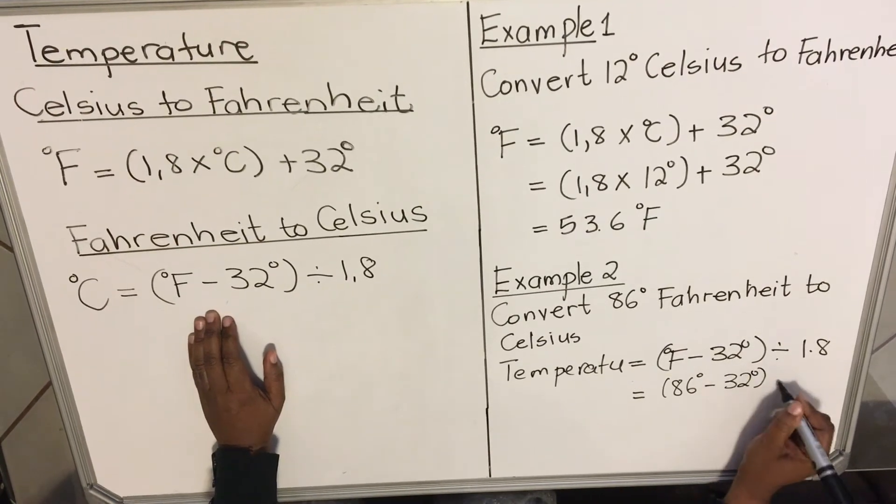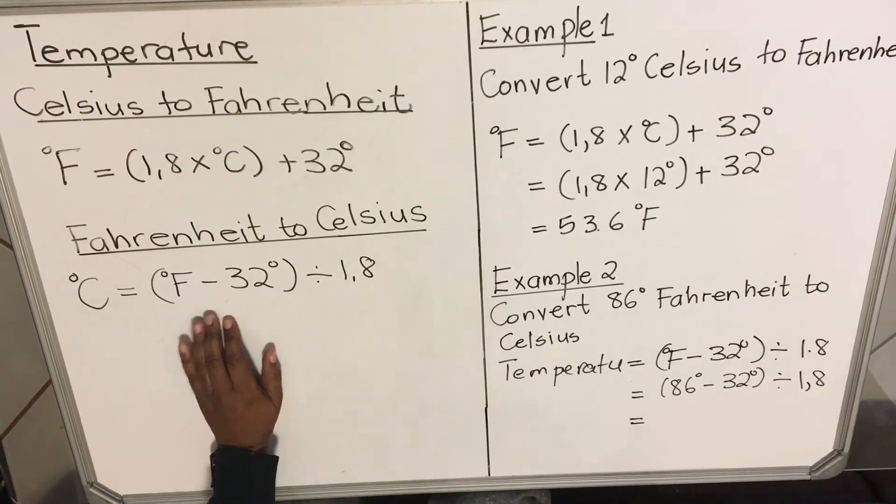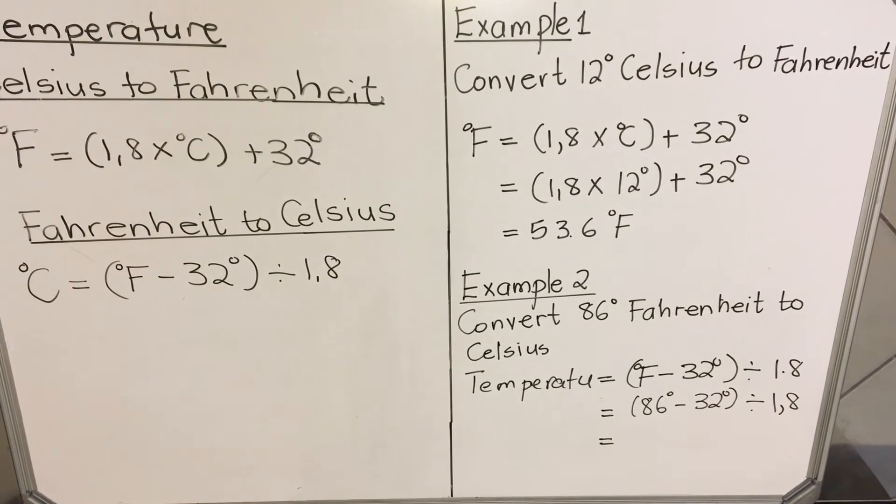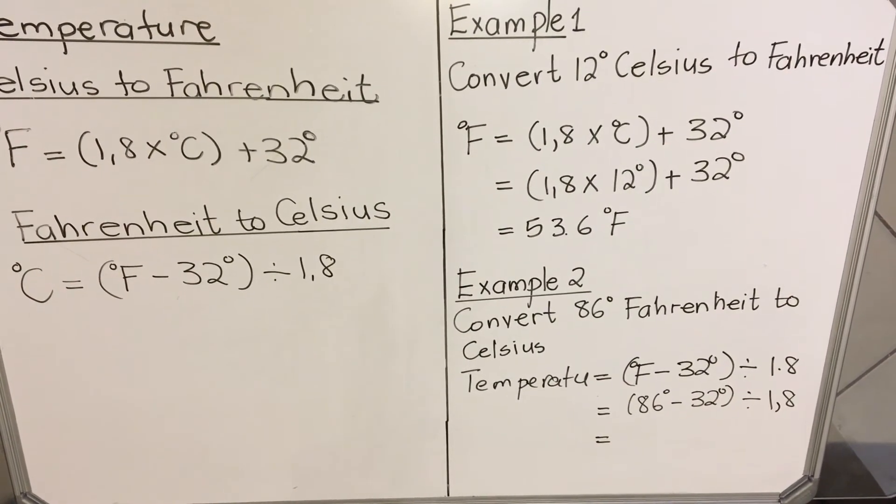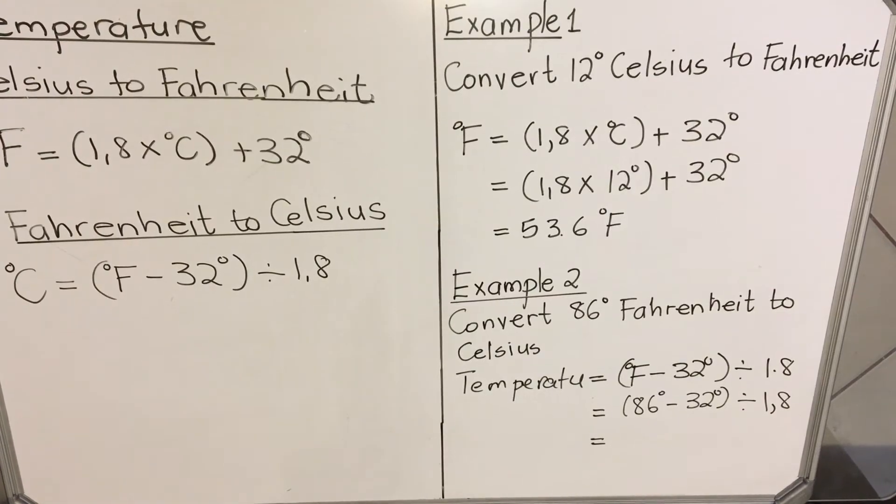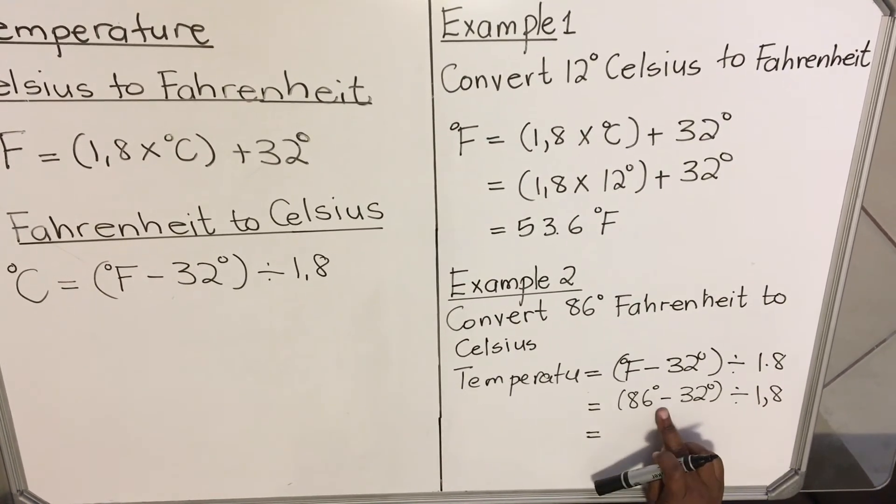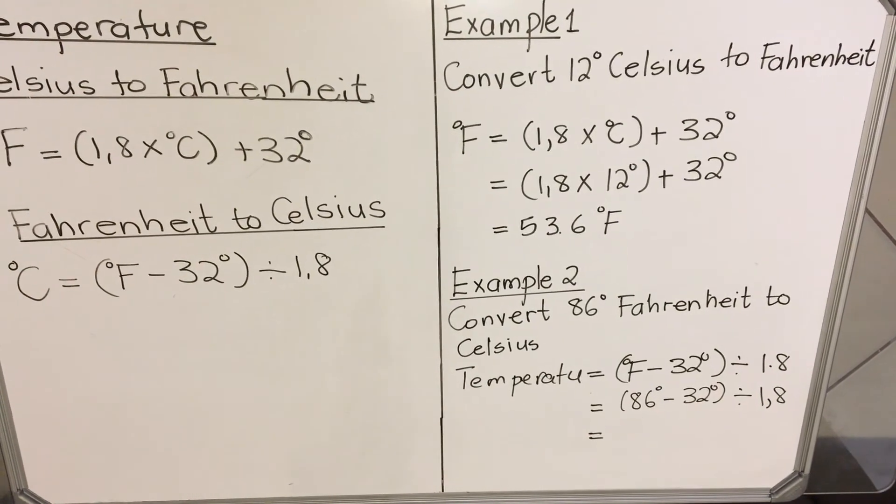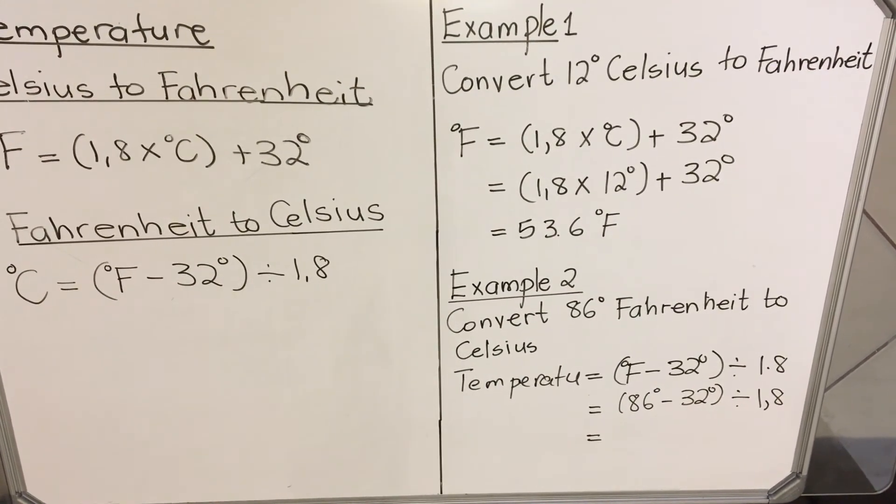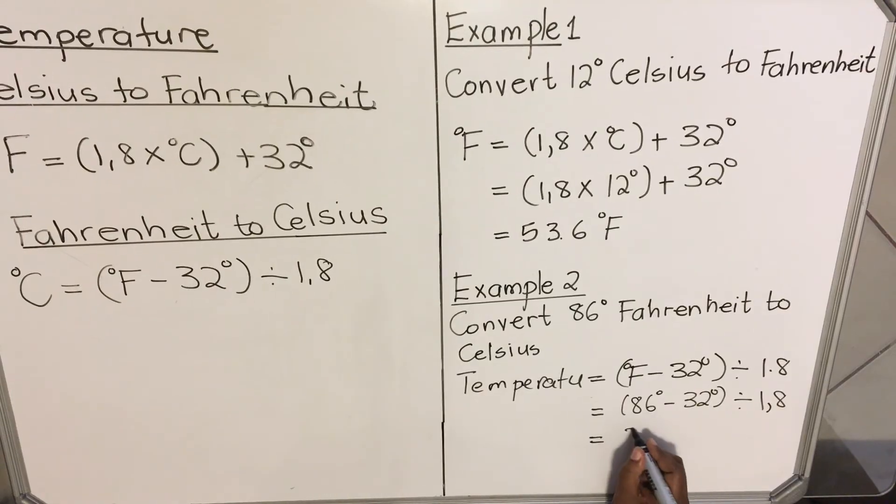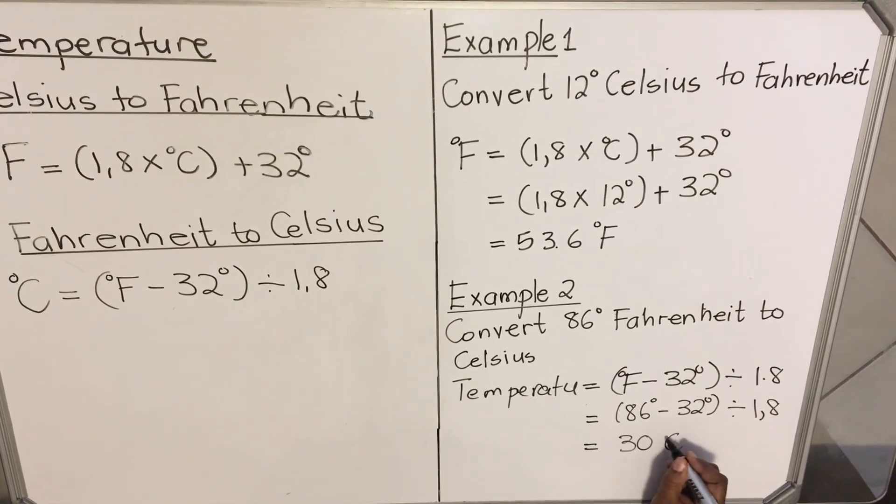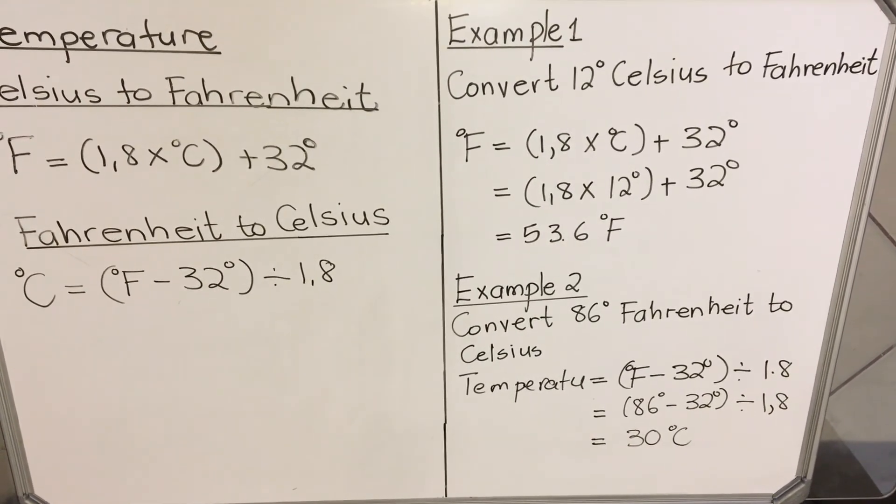Then you punch everything in your calculator. Here it's important that you do the 86 minus 32 and then you say equals to. Because if you punch it and you don't say equals to, it's going to divide that first and then add according to BODMAS. Then when you get your answer, you say divide by 1.8 and your answer will be 30 degrees Celsius.